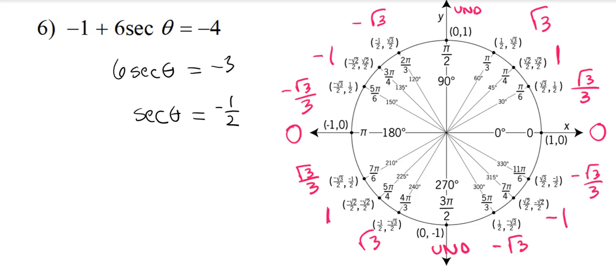So, when we get to this spot, secant of theta equals negative one-half, when we see secant, we may want to think of the reciprocal function of secant, which of course is cosine. So, secant's the same thing as one over cosine of theta.